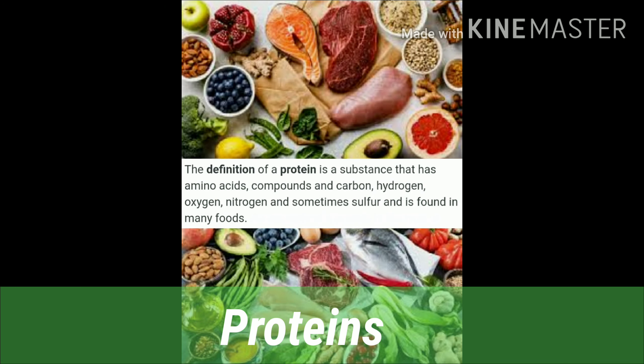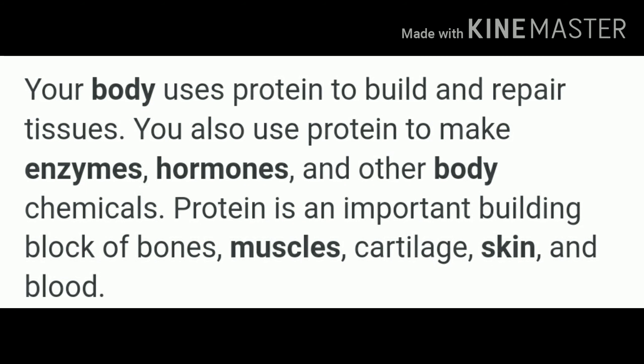Protein is a substance that has amino acids, compounds of carbon, hydrogen, oxygen and nitrogen, and sometimes sulfur, and is found in many foods. Your body uses protein to build and repair tissues. You also use protein to make enzymes, hormones and other body chemicals. Protein is an important building block of bones, muscles, cartilage, skin and blood.